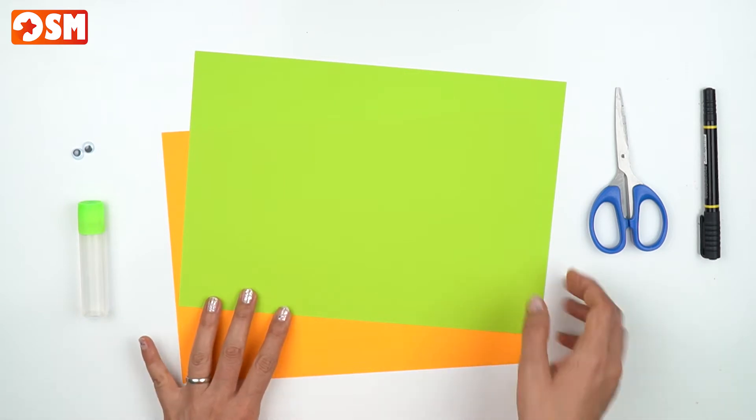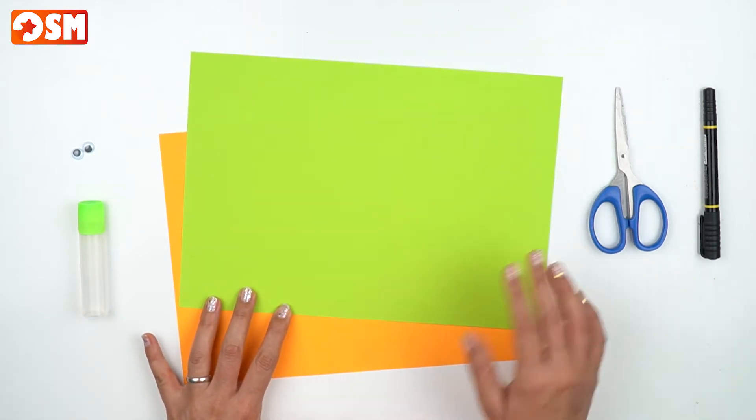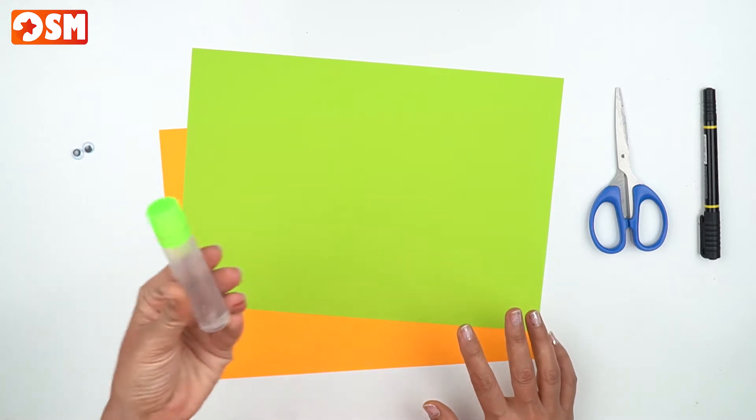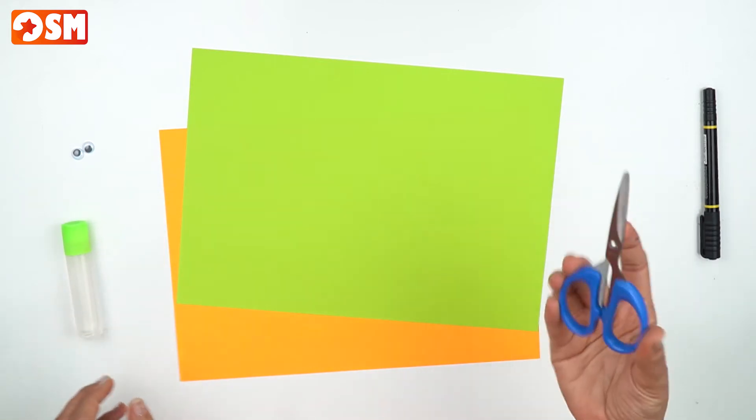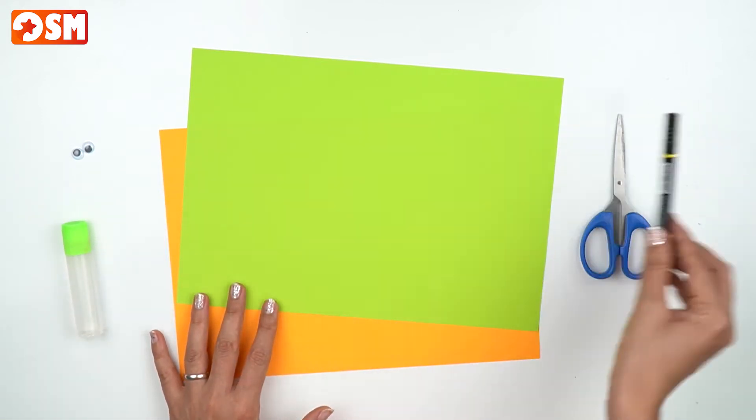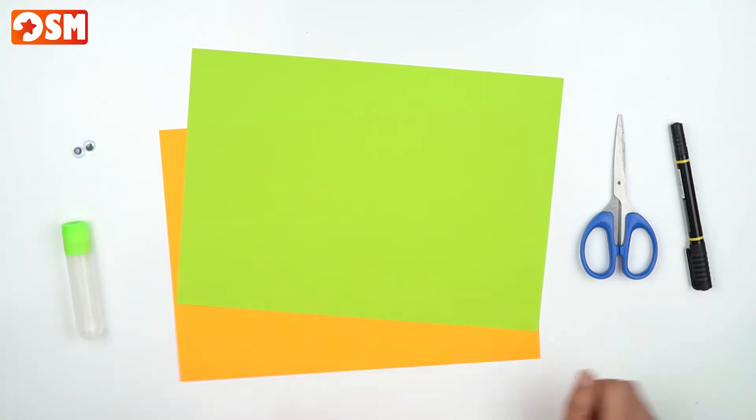As you see, we need paper, we need a glue stick, we need scissors, a marker to draw and two plastic craft eyes.